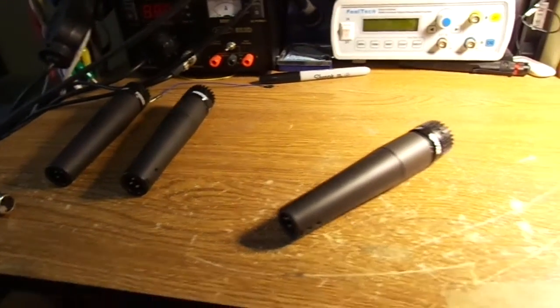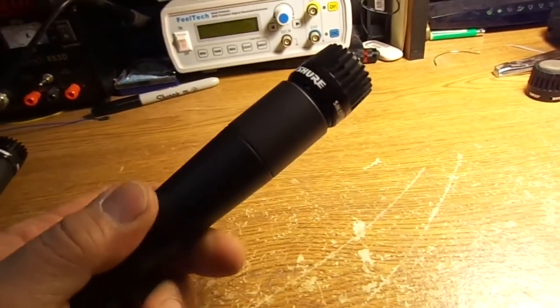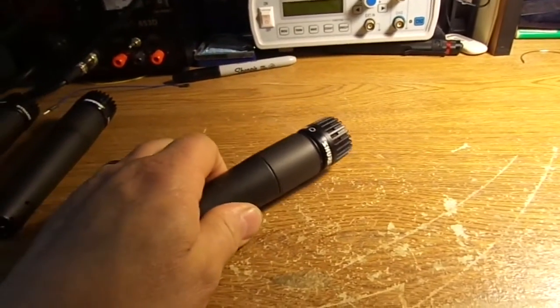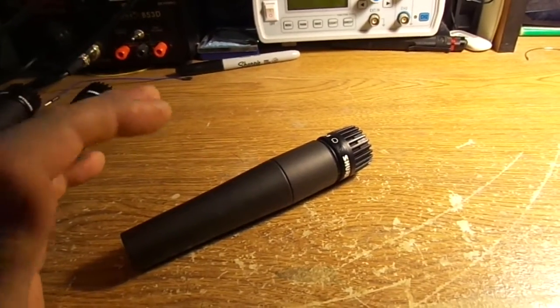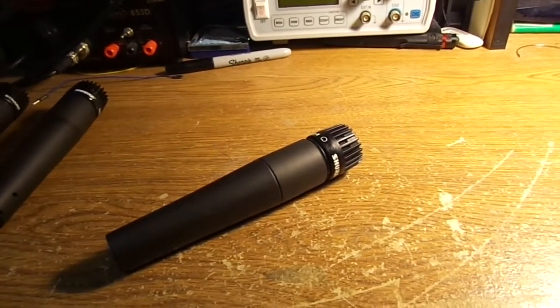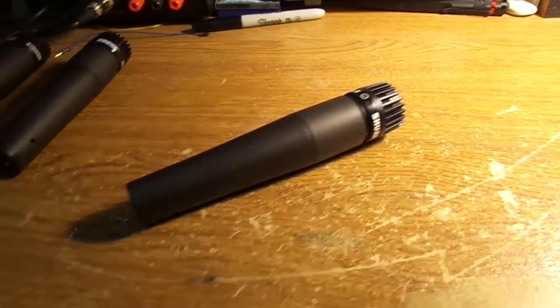So today we're going to be looking at the SM57 microphone. It's a great microphone. You find it on guitar cabinets a lot. I've actually seen it on bass cabinets and it sounds great. Just for kicks one night I put it in a kick drum. Sounded great in a kick drum too.